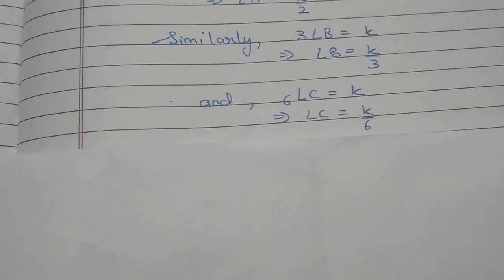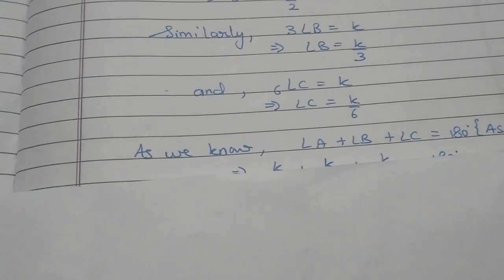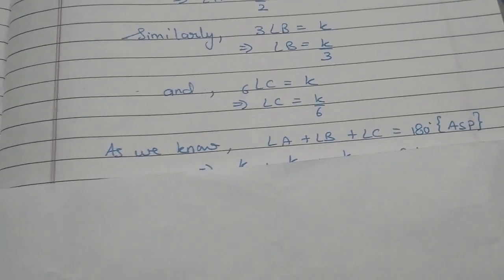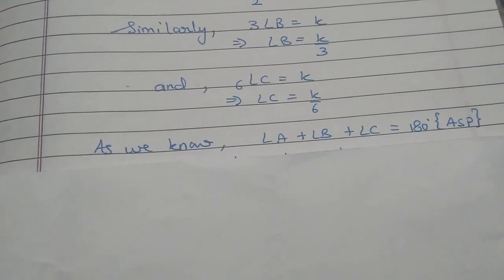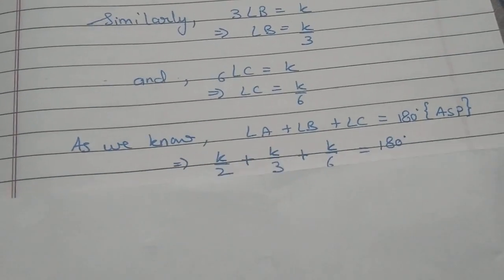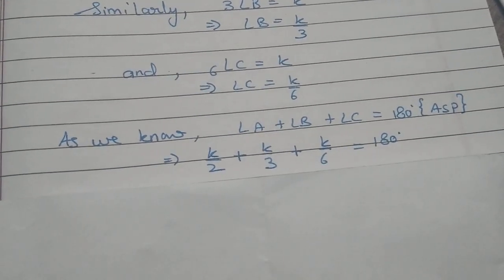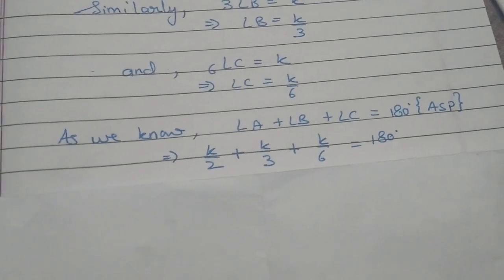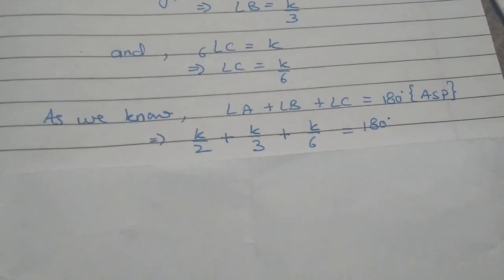And as we know, this is a triangle. So angle A plus angle B plus angle C is equal to 180 degrees. So angle A, B and C of value, we will substitute here.